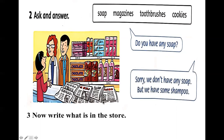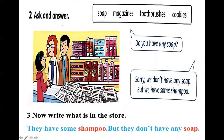Các bạn hãy ghi ra cho thầy 3 câu thôi, và thầy sẽ làm mẫu cho các bạn một câu. Now write what is in the store. Cái gì có ở trong cái cửa hàng — phần này các bạn ghi vào tập nha. Thầy sẽ cho ví dụ: They have some shampoo. But they don't have any soap — họ không có xà bông nhưng họ có dầu gội đầu. Đây là phần ask and answer — các bạn sẽ practice hỏi và trả lời, sau đó ghi 3 câu về những gì các bạn vừa hỏi và trả lời.